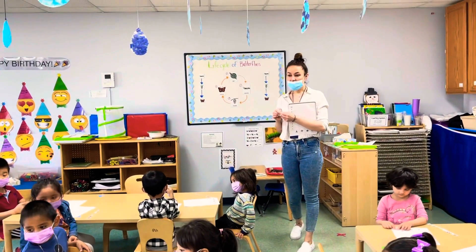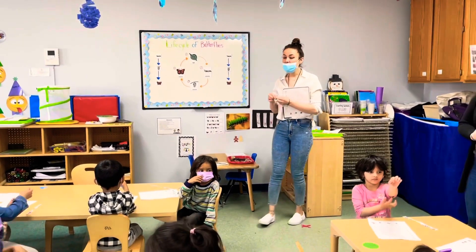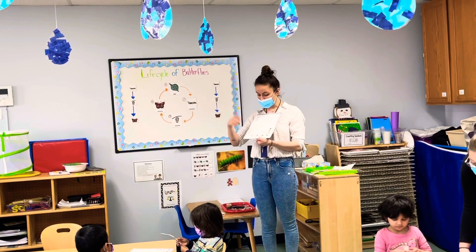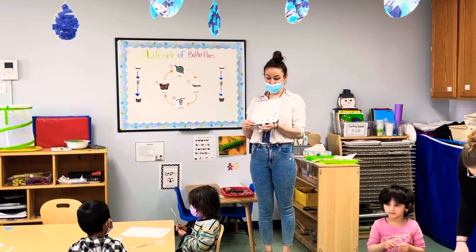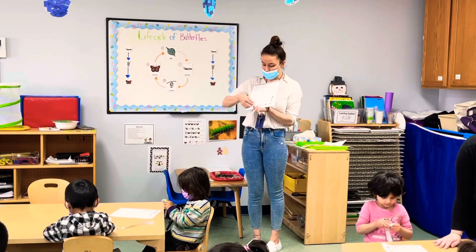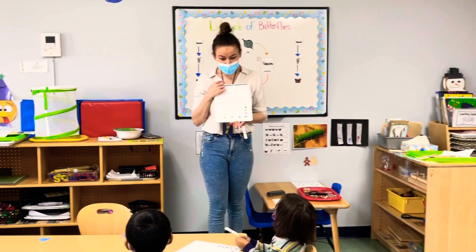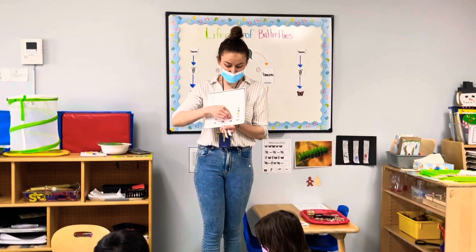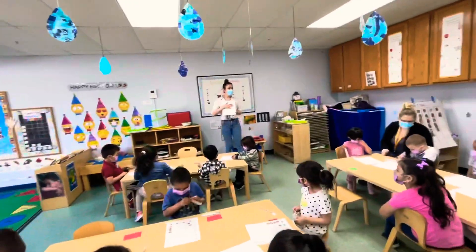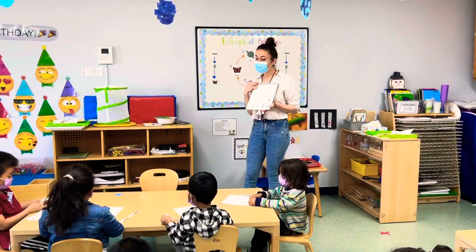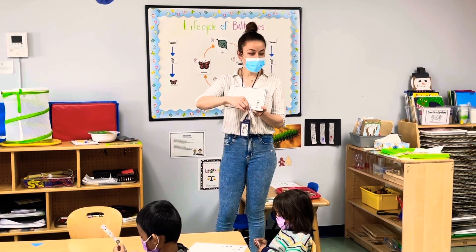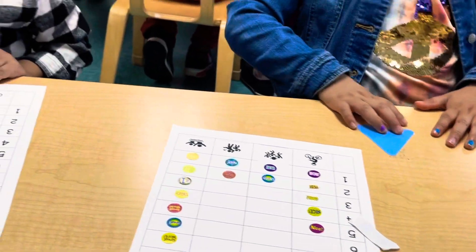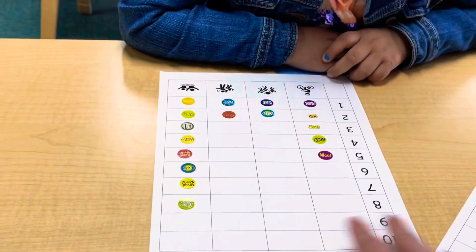Dina said swimming — everyone take off the sticker and put it above swimming. What is your favorite exercise: swimming, dancing, playing with friends, or bike riding? Henry said bike riding — that's different! Genesis said swimming. We have a lot of friends who like swimming — put another sticker. All our friends in our classroom shared what their favorite exercise was right here.